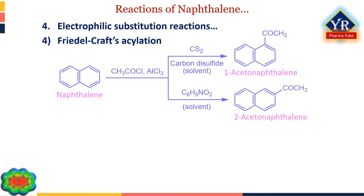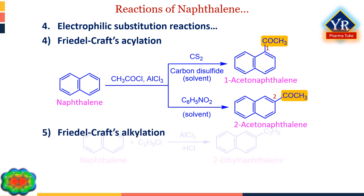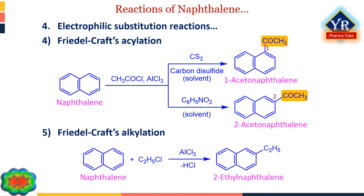In Friedel-Crafts reactions, mild conditions are essential since binaphthalenes are formed under vigorous conditions. Naphthalene undergoes acylation with acetyl chloride and aluminium chloride in carbon disulfide to give 1-acetylnaphthalene. When nitrobenzene is used as a solvent, 2-acetylnaphthalene is obtained.